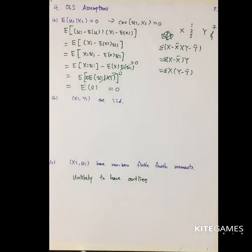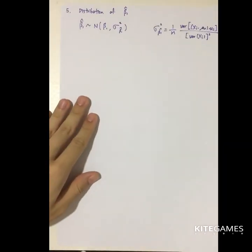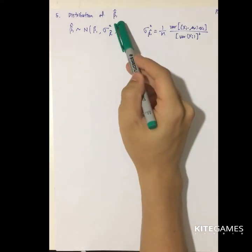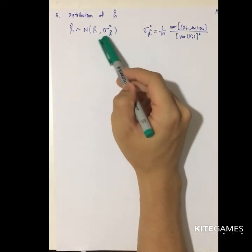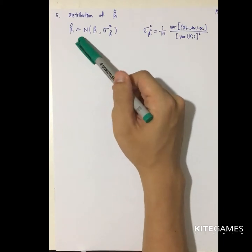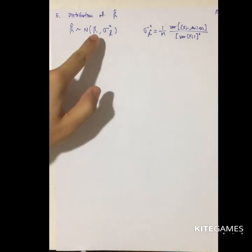These three are the OLS assumptions. Next, we will go to the mathematical parts and talk about the distribution of beta 1 hat. Beta 1 hat is the estimator. Of course, it will have some probability distribution. Beta 1 hat will have a normal distribution with mean beta 1 and variance of beta 1 hat.